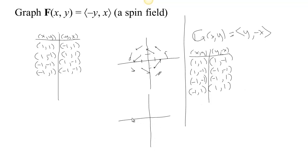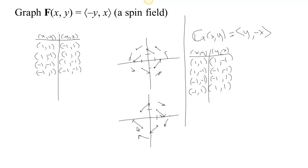Plotting this vector field: at (1, 1), we have a vector that goes forward 1 and down 1. At (1, -1), we have a vector that goes back 1 and down 1. At (-1, -1), we have a vector that goes back 1 and up 1. At (-1, 1), we have a vector that goes forward 1 and up 1. So we have another spin field. If you continue to fill these in, you'd find the vectors are spinning around — but this time clockwise instead of counterclockwise.